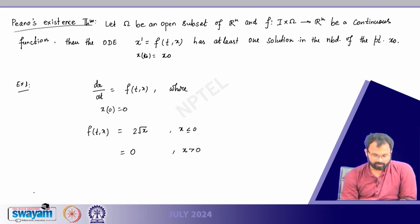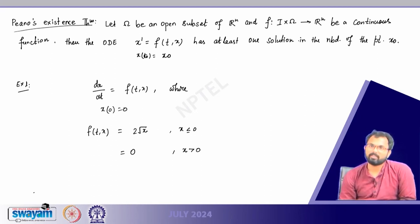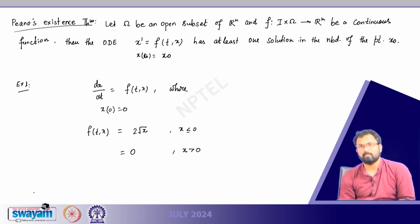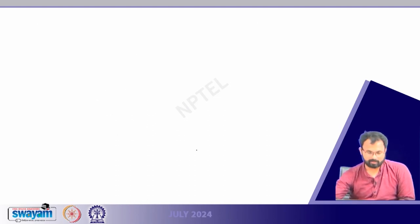Let us go to the next theorem which actually guarantees that if you have some special property associated with the right hand side, then we can say whether the solution is unique or not. For now we are only interested in local existence; global existence we will talk about after a few results.